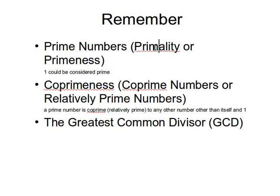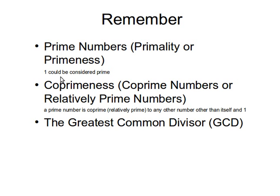Remember the prime numbers. We've learned what prime numbers are and how to check the primality, or the primeness, of a number — some people call it primality, some people call it primeness — but it's the same thing: to check whether a given number is prime or not. In prime numbers, one could be considered prime, but it's not very useful to use it as a prime number anyway.